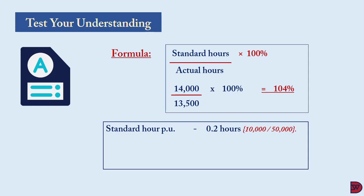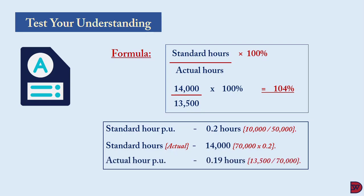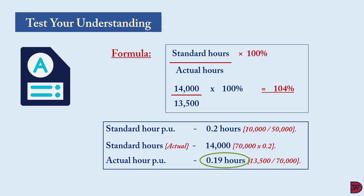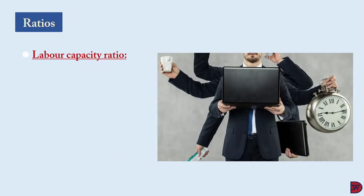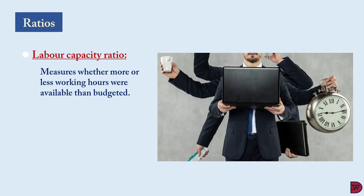The standard hour per unit is 0.2 hours — derived from the budgeted 10,000 hours divided by 50,000 units. Multiplying by the actual output of 70,000 units gives standard hours of 14,000. The actual hour per unit is 13,500 divided by 70,000 which equals 0.19 hours. So the business expected labor to use 0.2 hours per unit, but they actually used only 0.19 hours — confirming the efficiency gain.